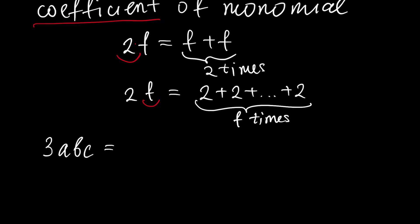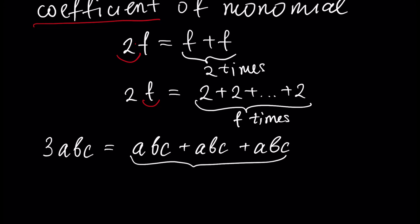It's better to take a number as a coefficient if you have numbers. In this case, you have abc plus abc plus abc — so this is abc three times. Or, 3 multiplied by abc, where abc is a times b times c. This is the multiplication of three letters.